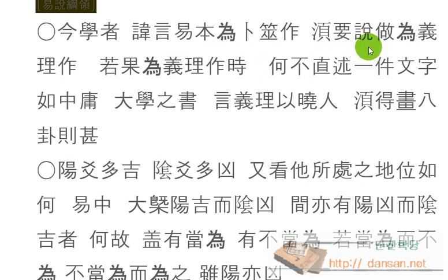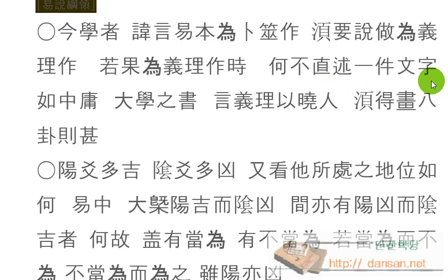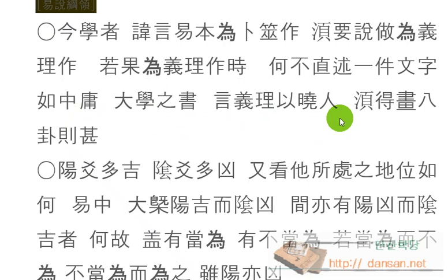요구하기를 의리를 위해서 지은 것이다라고 하기를 요구한다 이거죠. 그렇다면 약과위 의리작시에, 과연 의리를 위해서 지었다라고 하면, 어찌하여 곧바로 한 건의 문자 기술하기를 여 중용 대학지서에 언 의리 교인하고 그렇다면 중용이라든지 대학 같은 그 글에 의리를 말해서 사람들을 깨우친 것같이 하지 않고.